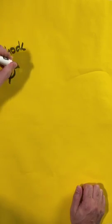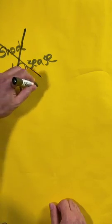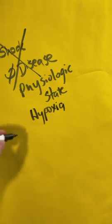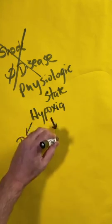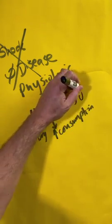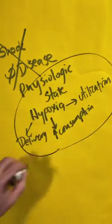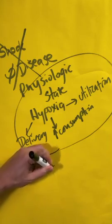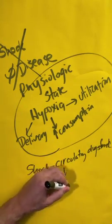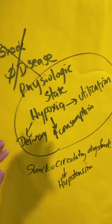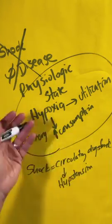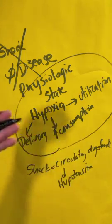We're talking about shock. Shock is not a disease, it's a physiologic state of cellular hypoxia due to a reduction in oxygen delivery, increased consumption, inadequate utilization, or some combination. Classically, shock is due to circulatory dysfunction which leads to hypotension, but just remember the body has so many adaptive mechanisms that people can be normotensive or sometimes even hypertensive. So blood pressure alone does not equal shock.